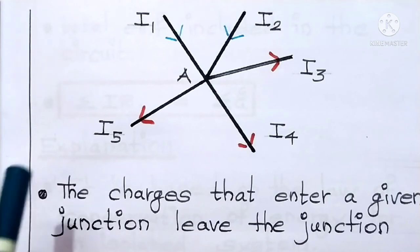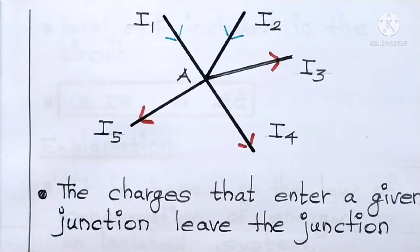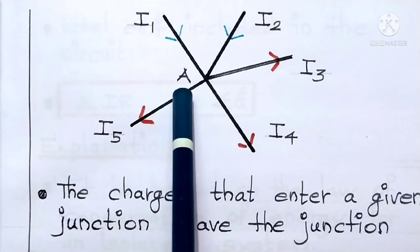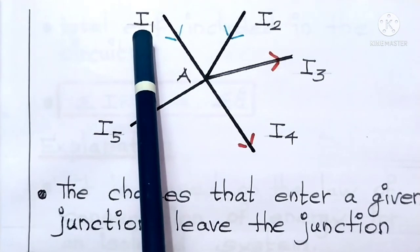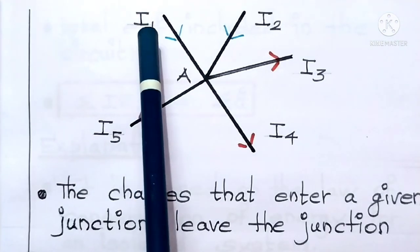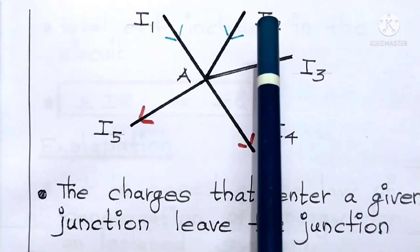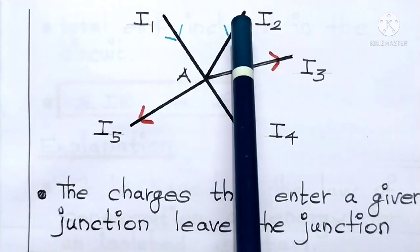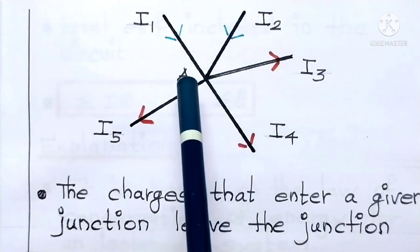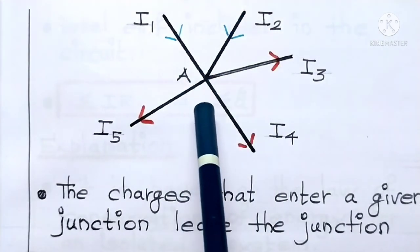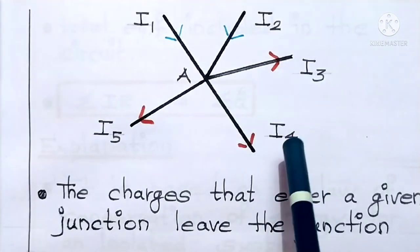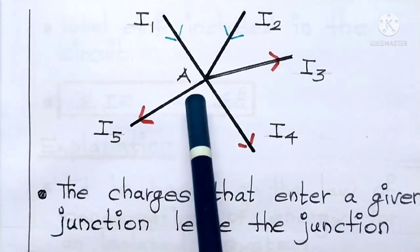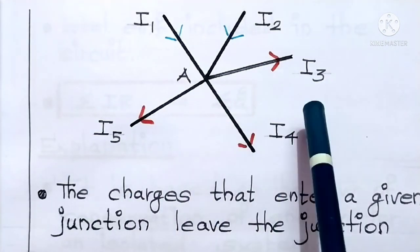Now have a closer look at this diagram. Here comes the junction A, and currents I1 and I2 enter the junction, whereas the currents I3, I4, and I5 leave the junction.